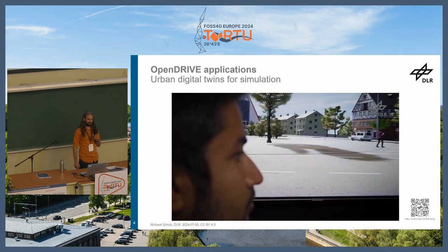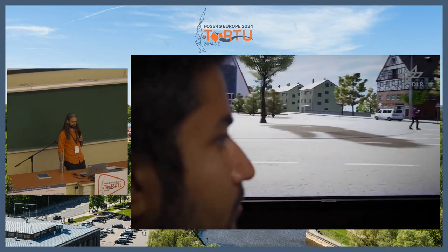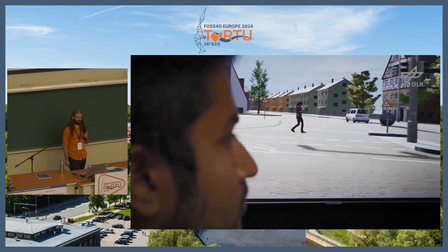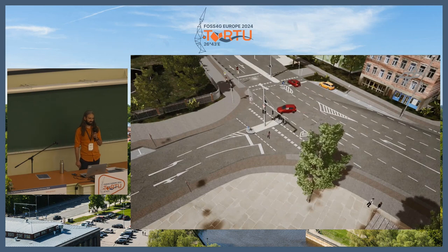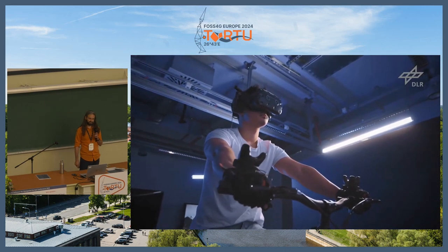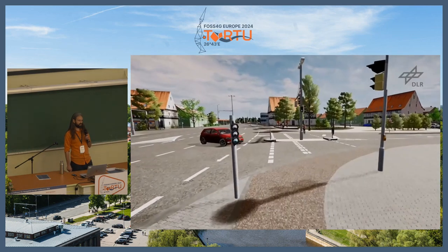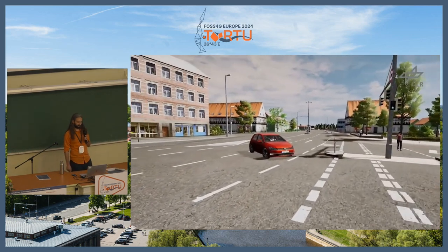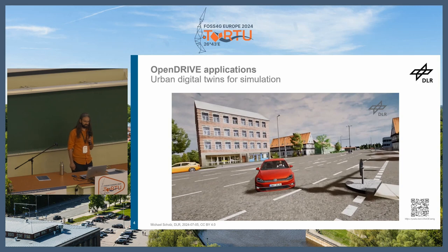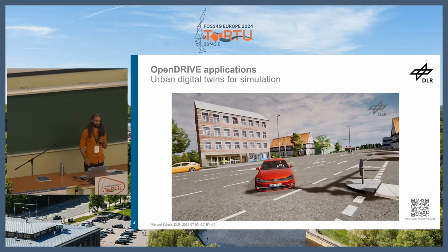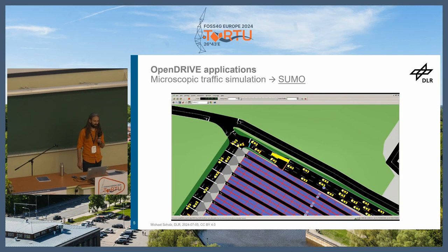Let's take a look at the applications. OpenDRIVE is very often used in different simulation aspects. This is a snapshot from a driving simulation — cooperative simulation with traffic participants like cyclists and pedestrians — and we do a lot of human factors research to see how people behave in traffic and mobility. OpenDRIVE is also used for urban digital twin creation of the road space, where you need specific automotive engineering formats.